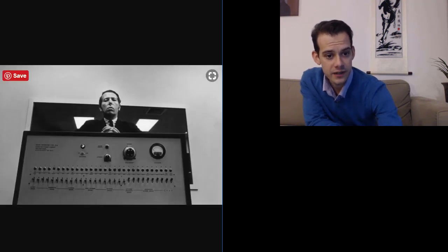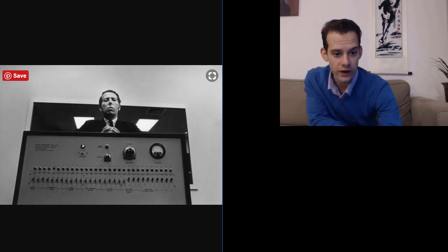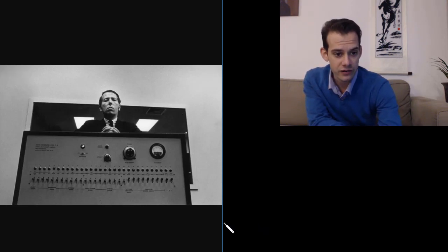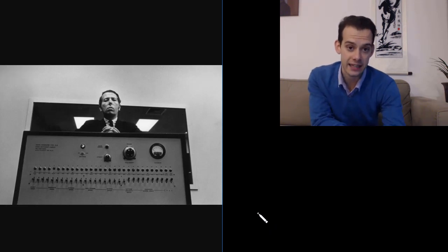And here we can see the shock generator. Each of these switches would represent a different voltage starting at 15 volts and going all the way up to 450 volts. They have labels underneath which say things like moderate shock or danger, severe shock. And at the very end we see just XXX.